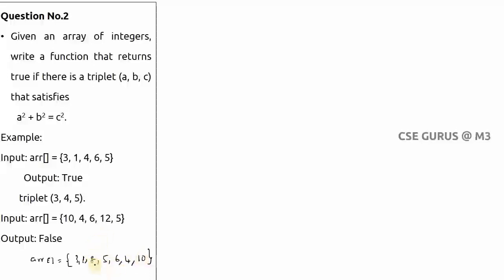In this seven-element array, there are not one but two triplets: (3, 4, 5) and (6, 8, 10). So the output should print true as well as both triplets. This is the problem we need to solve.